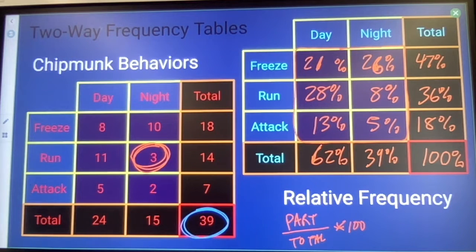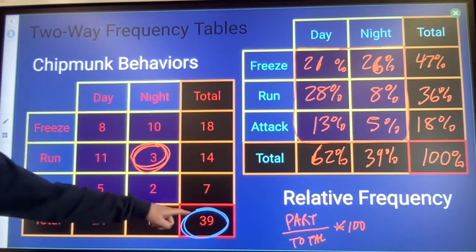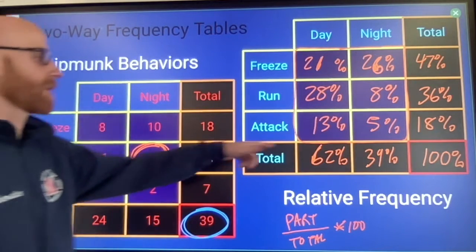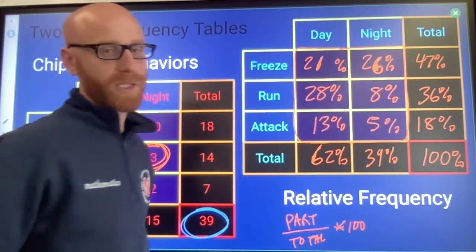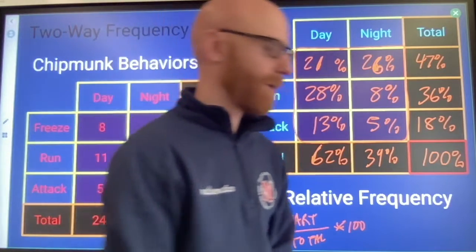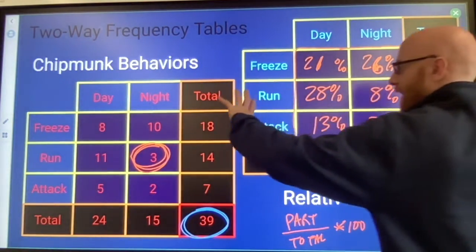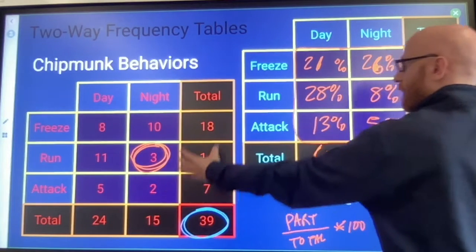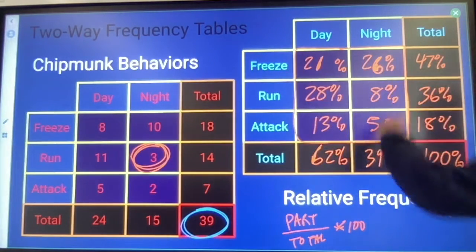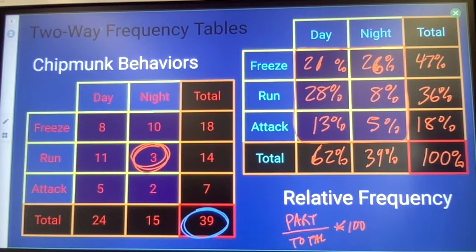What percent of chipmunks were seen in the daytime? 24 divided by 39 times 100 gives 62%. So this is taking a two-way table and turning it into a relative frequency table.